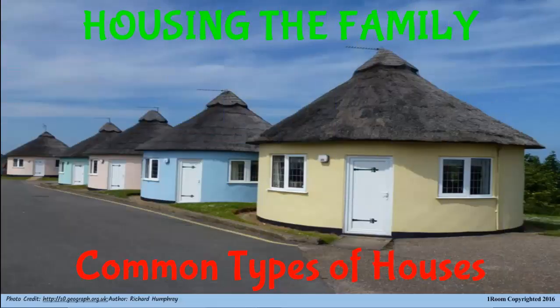Housing the family. Common types of houses. Jim and his parents are on their way back home from the tour. On the bus, he sees so many different structures that look like houses. Out of curiosity, Jim finds out from his mother why the houses look different from the ones back at home.